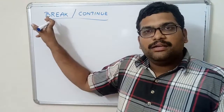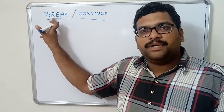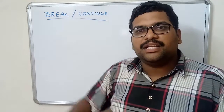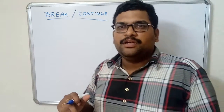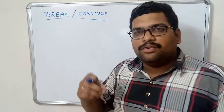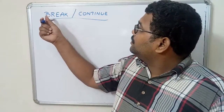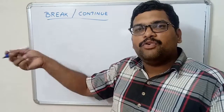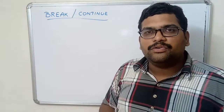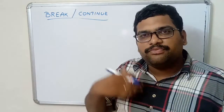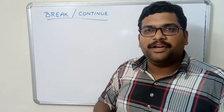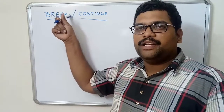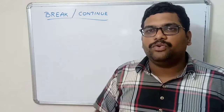Coming to break, we have seen the importance of break statements in the multi-way selection statement, that is switch. Whenever the control executes this break statement, immediately the control will come out from the loop. The rest of the iterations will be terminated. Immediately after executing this break statement, the control will come out from the loop.